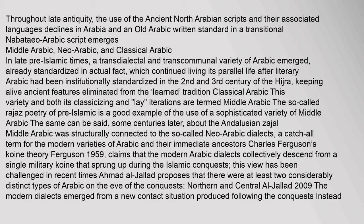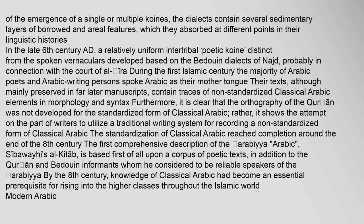This variety and both its classicizing and colloquial iterations are termed Middle Arabic. The so-called Raj's poetry of pre-Islamic times is a good example of the use of a sophisticated variety of Middle Arabic. Middle Arabic was structurally connected to the so-called Neo-Arabic dialects, a catch-all term for the modern varieties of Arabic. Charles Ferguson's coin theory (1959) claims that the modern Arabic dialects collectively descend from a single military coin that sprung up during the Islamic conquests. This view has been challenged; Ahmad al-Jalid proposes that there were at least two considerably distinct types of Arabic on the eve of the conquests: Northern and Central.